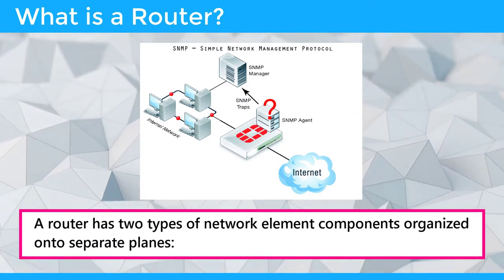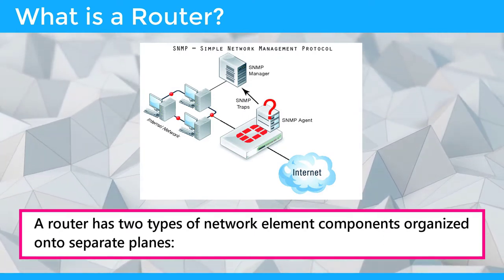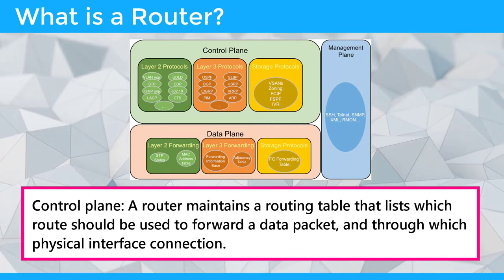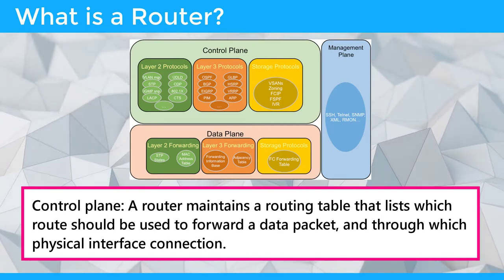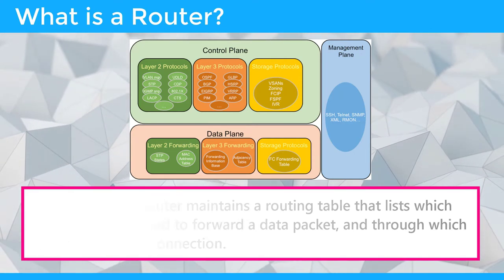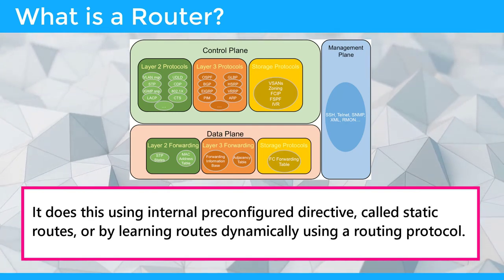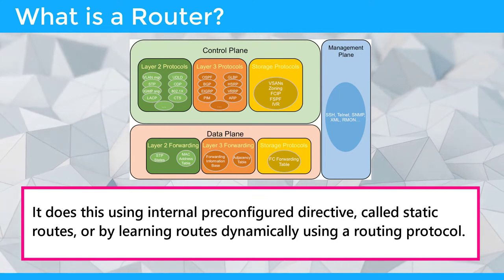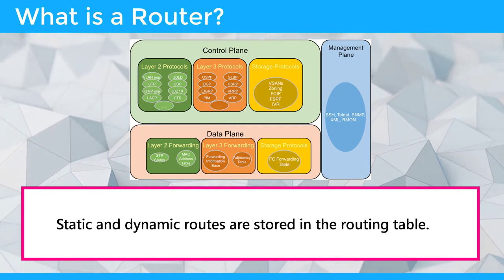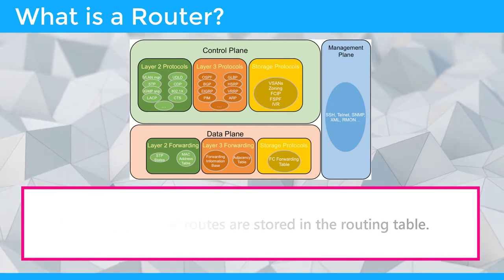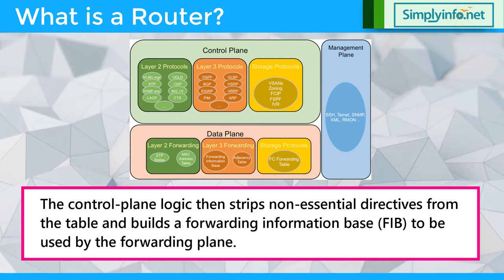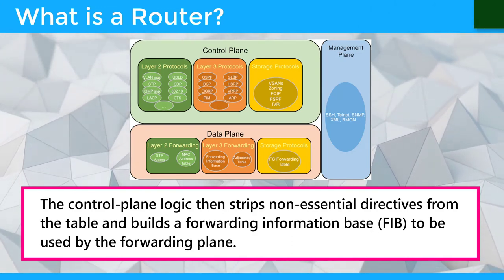A router has two types of network element components organized onto separate planes. The control plane maintains a routing table that lists which route should be used to forward a data packet and through which physical interface connection. It does this using internal pre-configured directives called static routes, or by learning routes dynamically using a routing protocol. Static and dynamic routes are stored in the routing table. The control plane logic then strips non-essential directives from the table and builds a forwarding information base to be used by the forwarding plane.